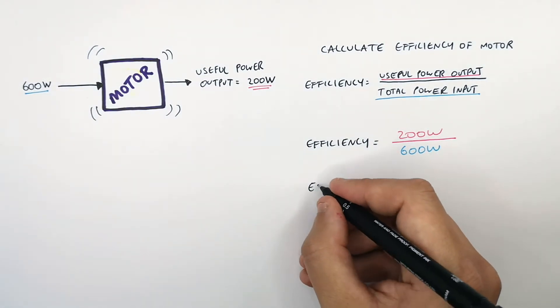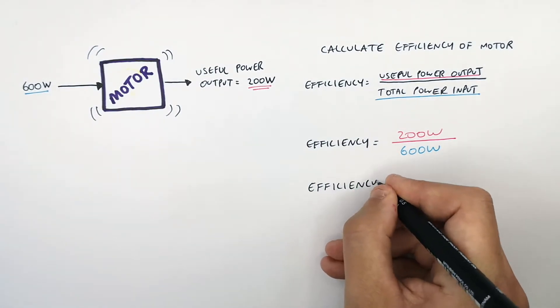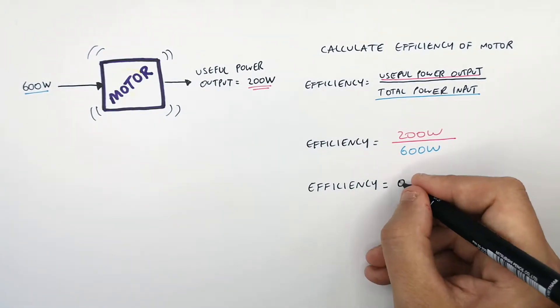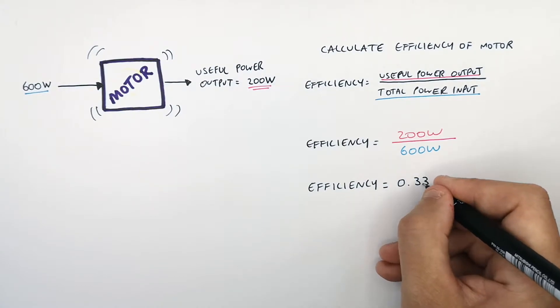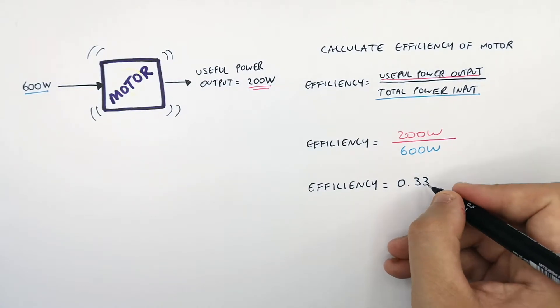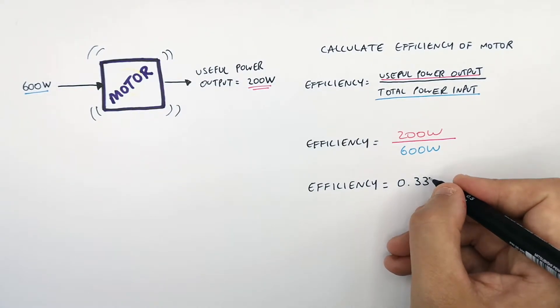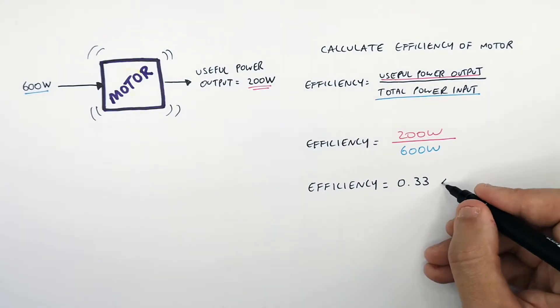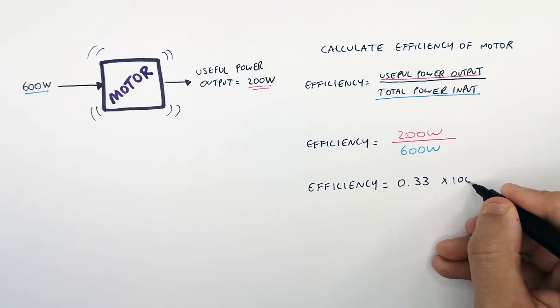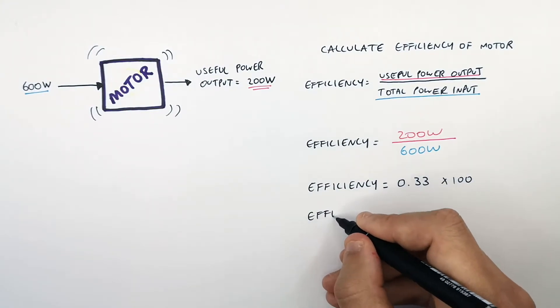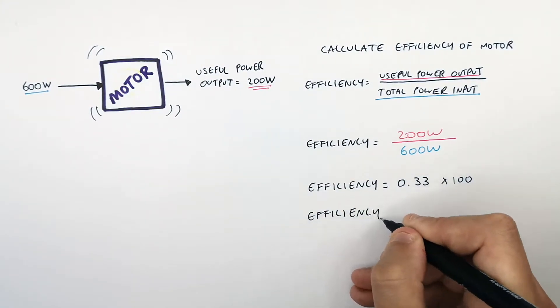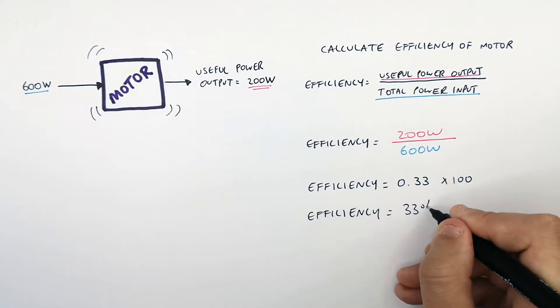This gives you an efficiency — 200 divided by 600 — which gives you an efficiency of 0.33. To get that as a percentage, you multiply by 100, and you've now got an efficiency for this motor of 33%.